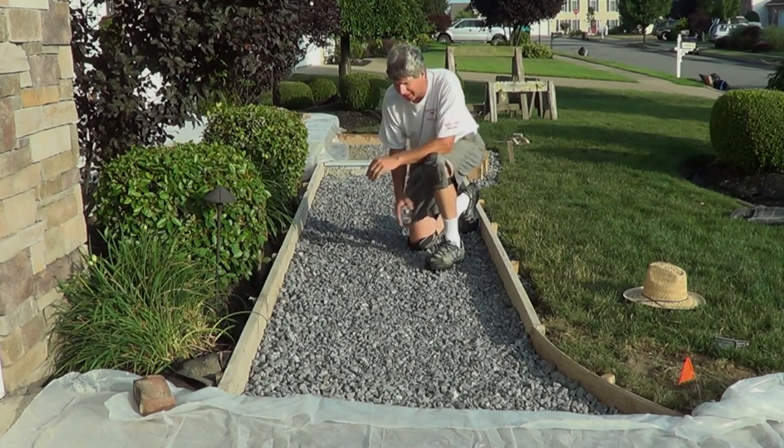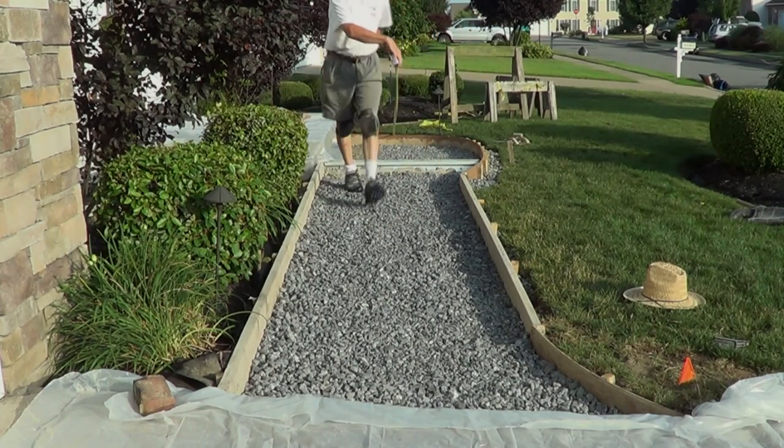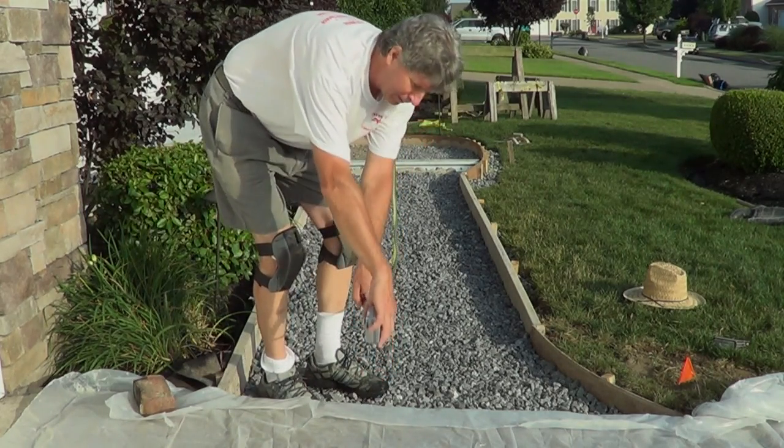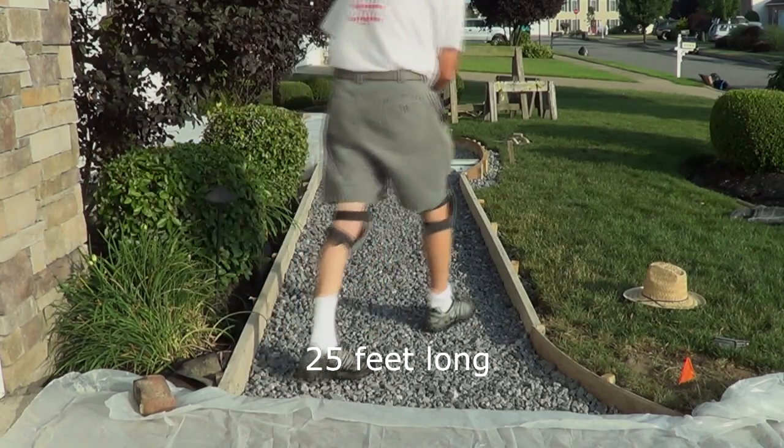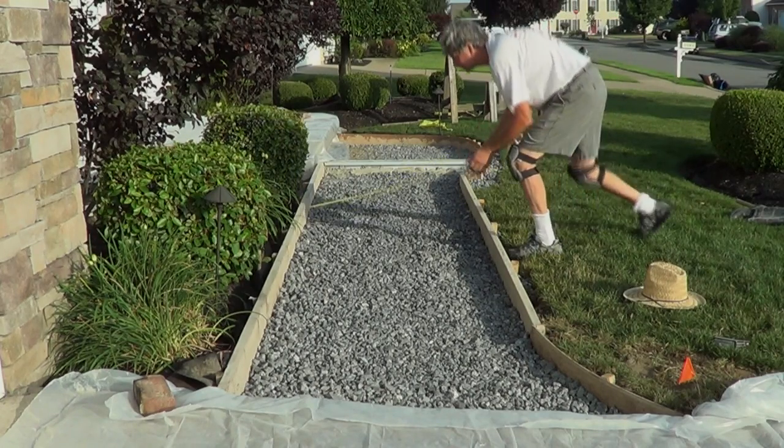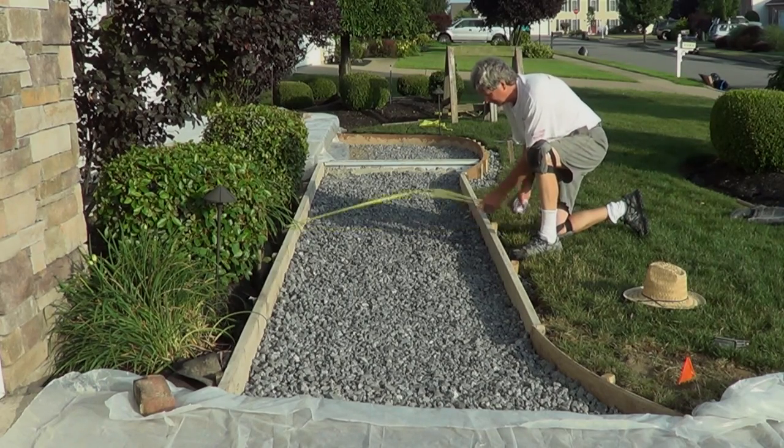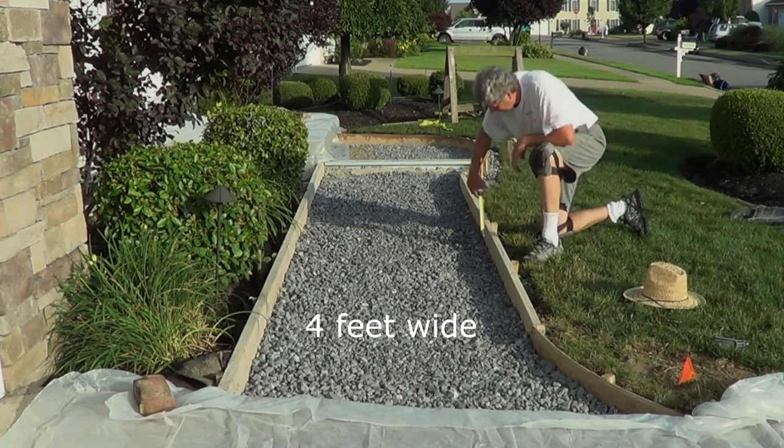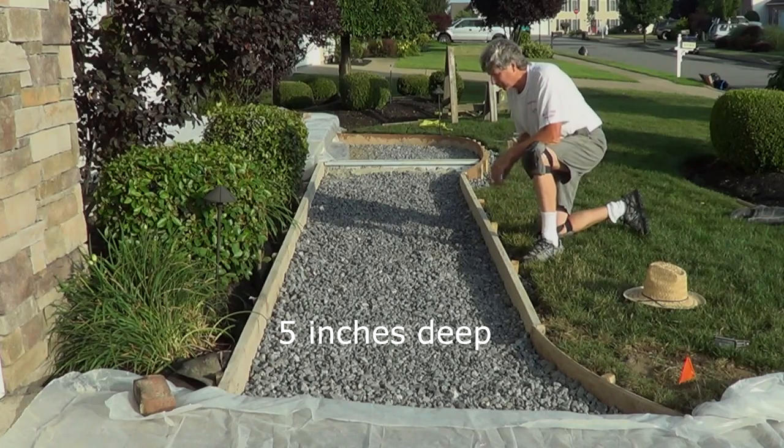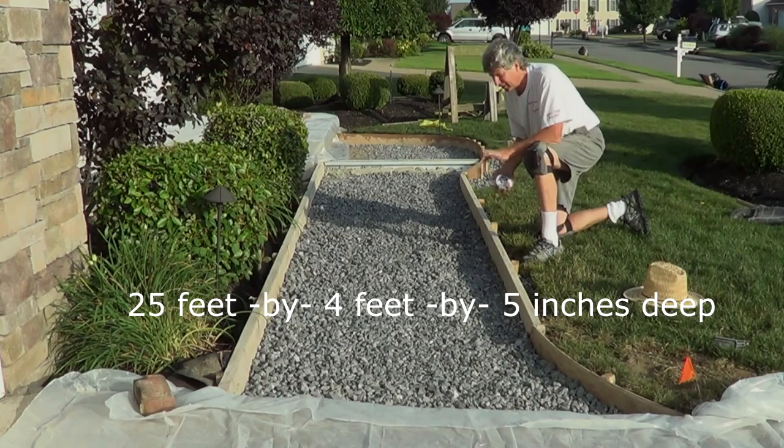This is a sidewalk pour today. We go from here to here and I got 24 feet. Well, I'm going to figure 25. And right here I got 44 inches. I'm going to figure 4 feet. And I know the sidewalk goes down 4, 4 and a half inches. I'm going to figure 5 inches. So it's 25 feet by 4 feet by 5 inches. That's what I'm going to figure out.